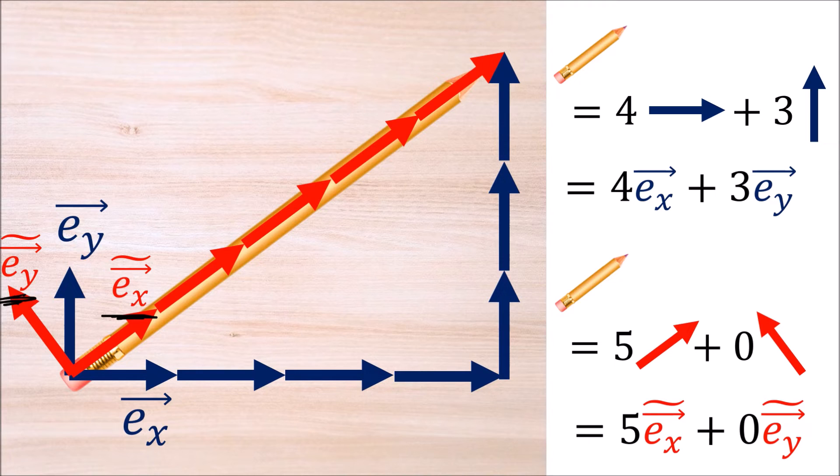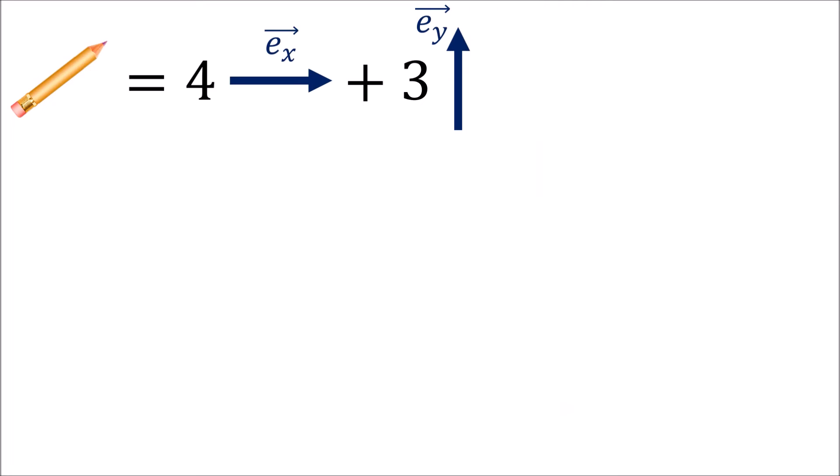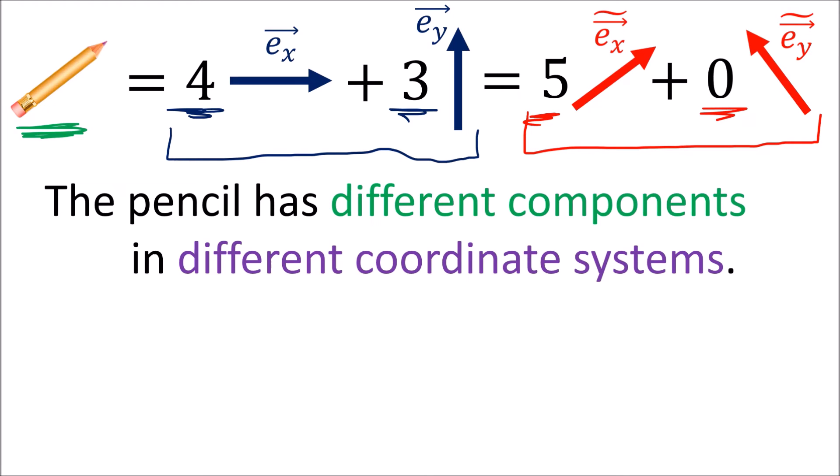Now there's a really important idea going on here. We see that the pencil separation can be described in two different ways, using different numbers depending on which basis vectors we're using. We can express the pencil in terms of the EX and EY basis vectors and get the components 4, 3. Or we can express the pencil in terms of the EX tilde and EY tilde basis vectors and get the components 5, 0. Now the pencil is a physical object and it's not changing. But the pencil can have different components if we measure it using a different coordinate system, or in other words different basis vectors. And this is the main idea behind invariance. The pencil is invariant, or in other words it's not changing, but the pencil's components can change depending on how we measure it.